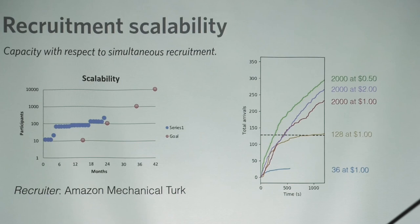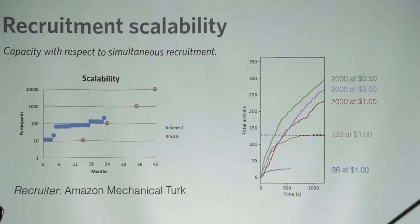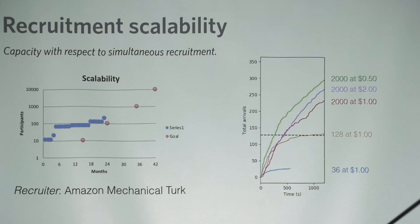The waiting room has a concept of a quorum — the number of people that must be present for it to proceed to the study. Here I've recruited with over-recruitment: 36 people, 128 people, up to 2,000 people with an over-recruitment multiple of 2. What this graph is plotting is the total number of people who have arrived at the waiting room as a function of time.